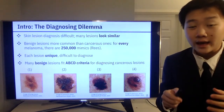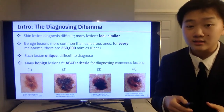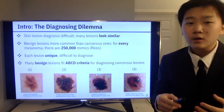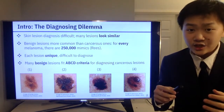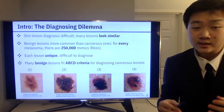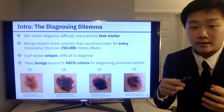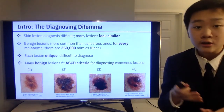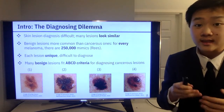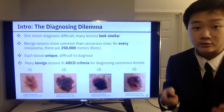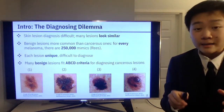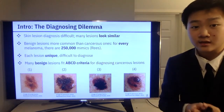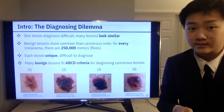Now let's take a look at why it might be so difficult to correctly diagnose a skin lesion. First, there are hundreds of types of different skin lesions, and many of them look very similar to each other. In addition, benign lesions are much more commonly found than cancerous ones — for every melanoma, there are around 250,000 mimics. And each lesion is unique, which means there's no clear-cut way for a dermatologist to classify a skin lesion correctly every single time.